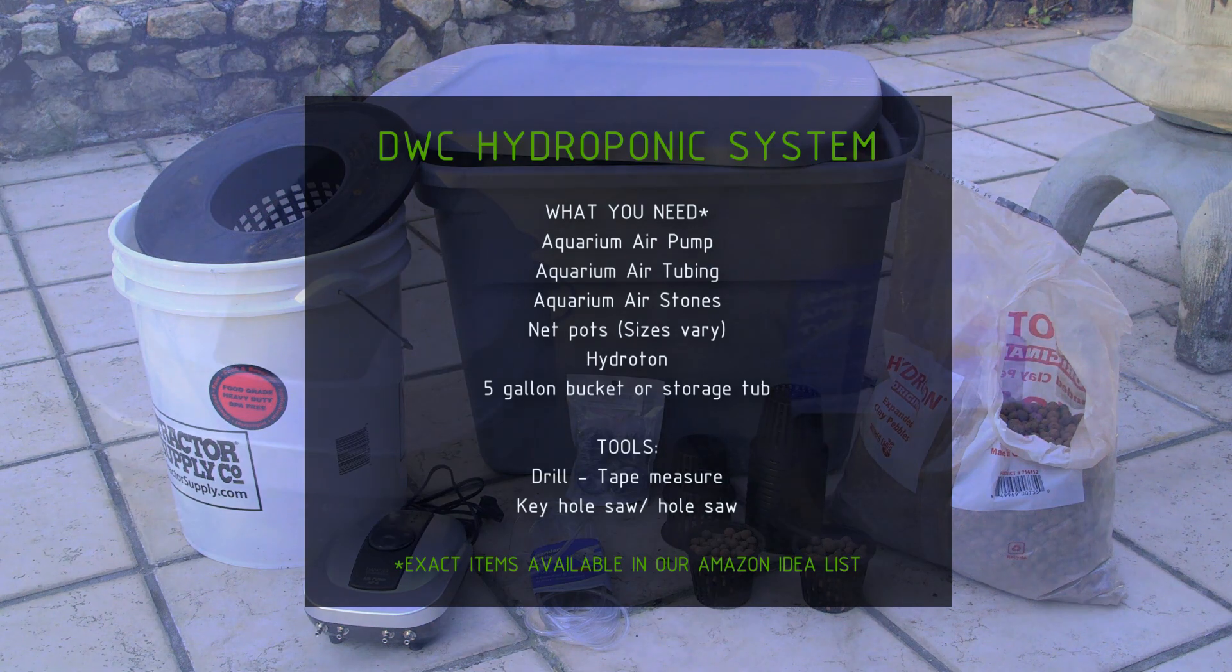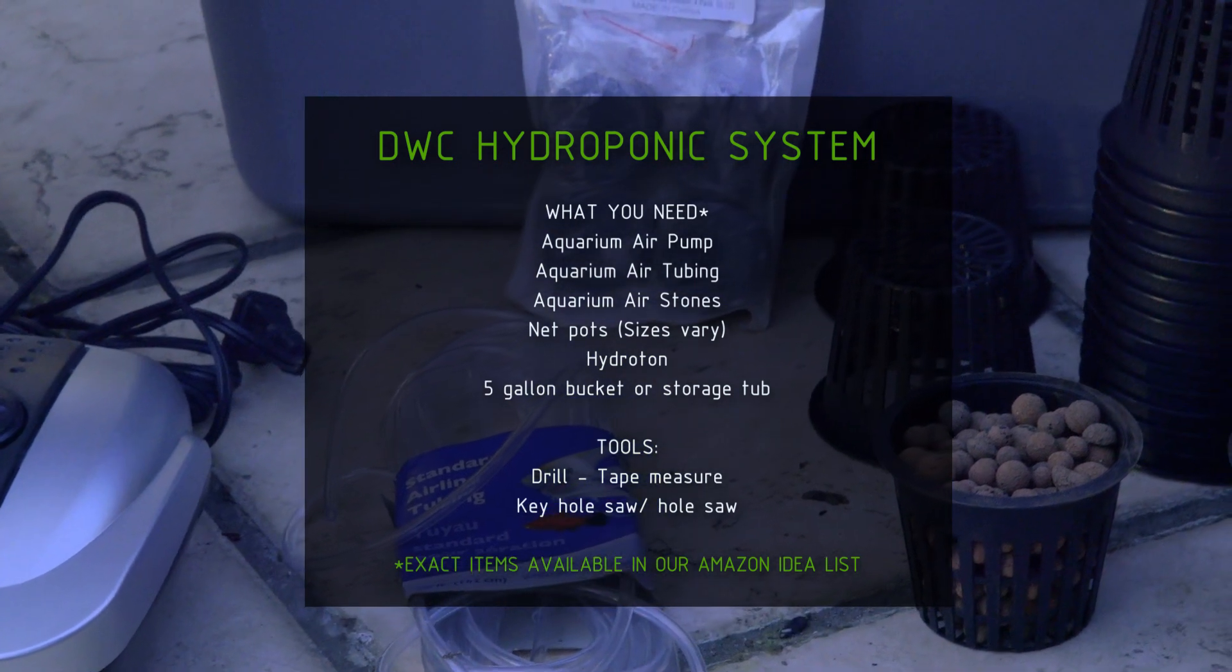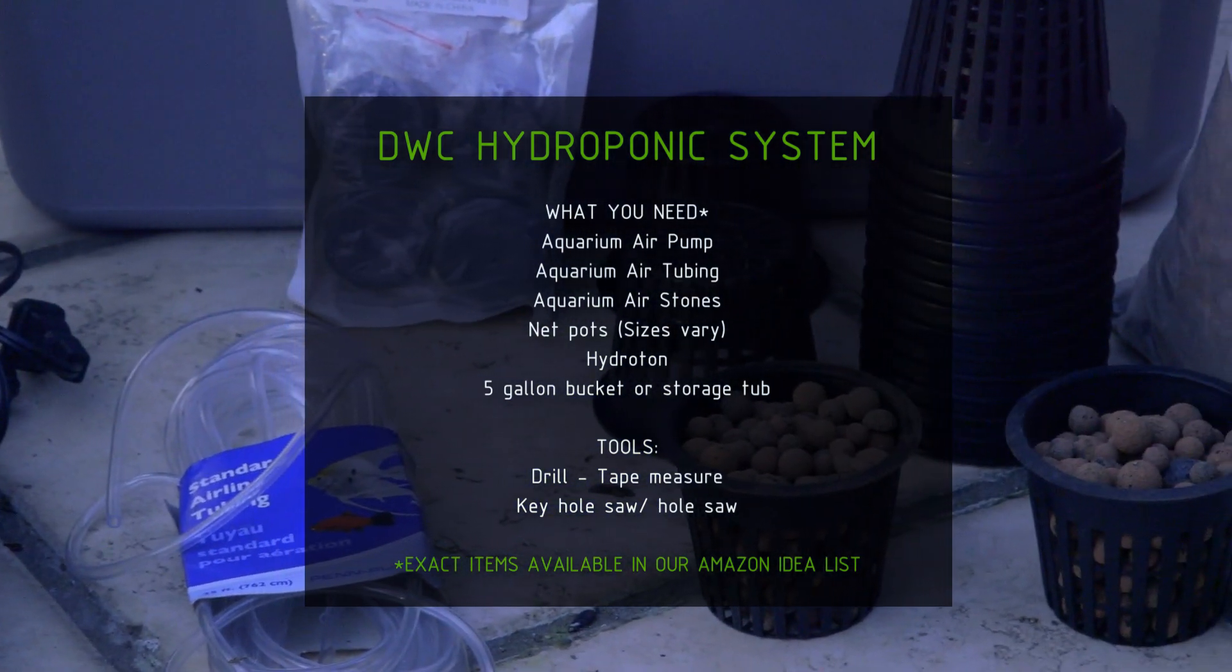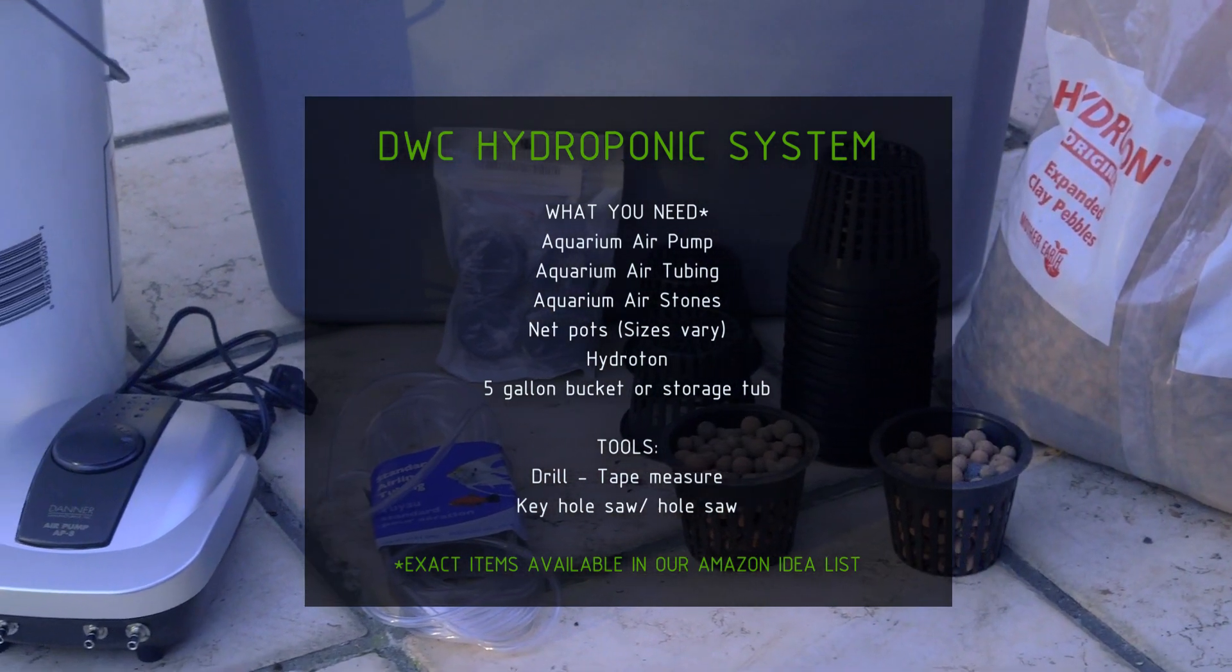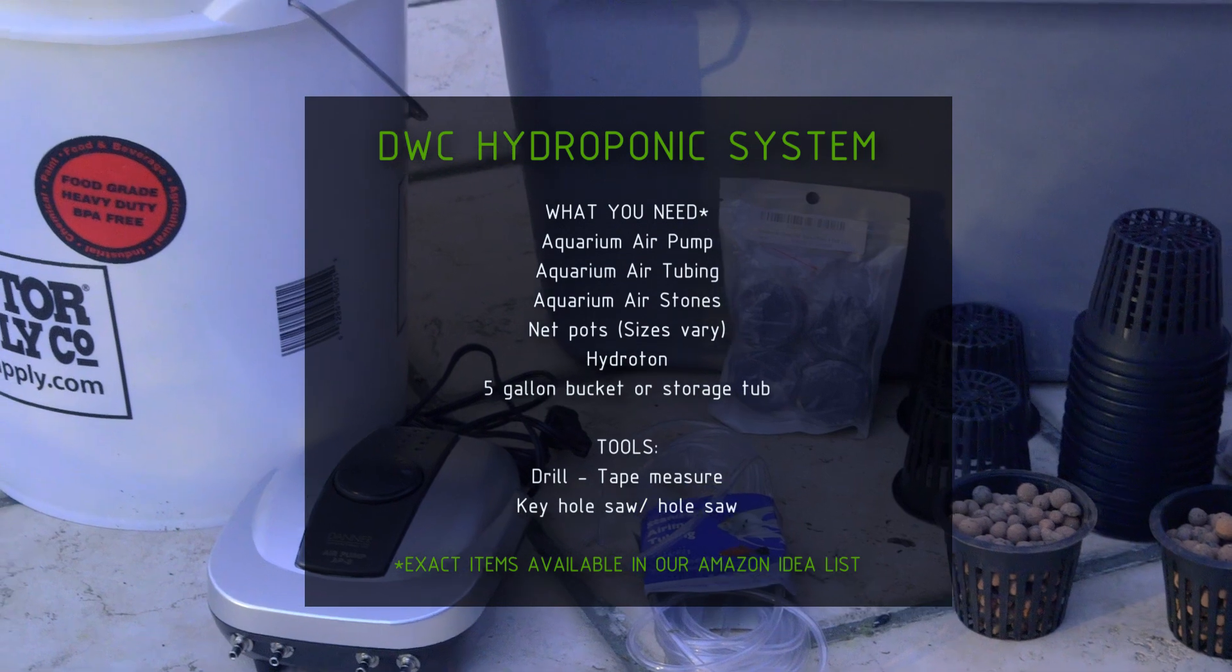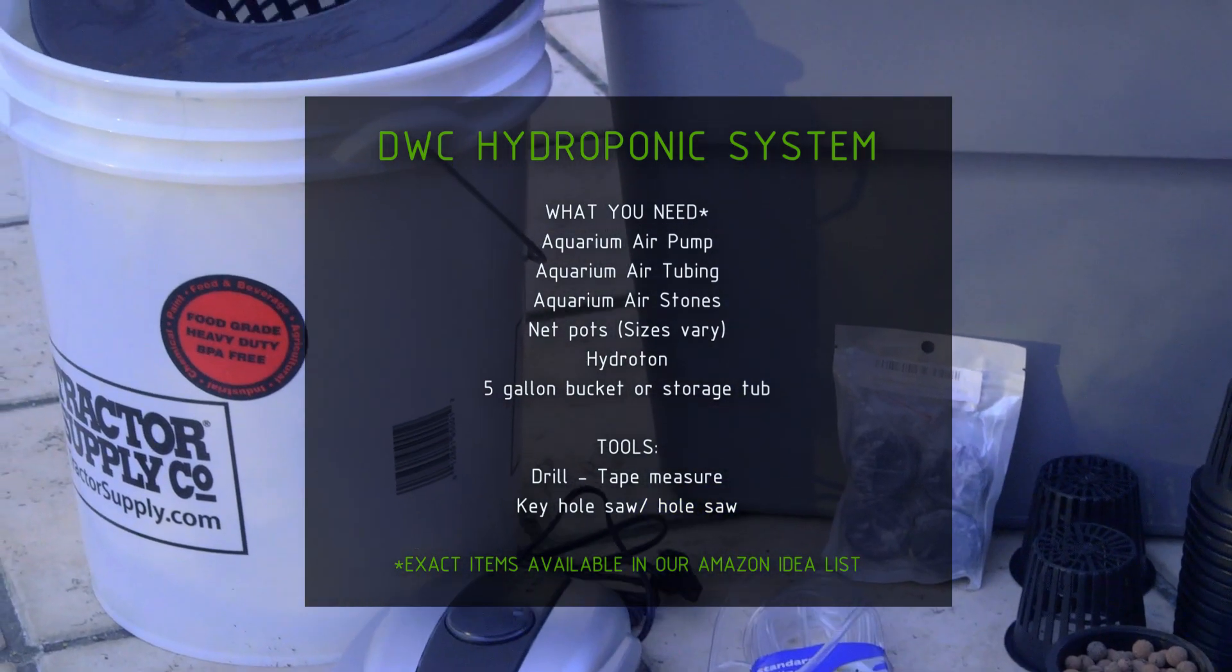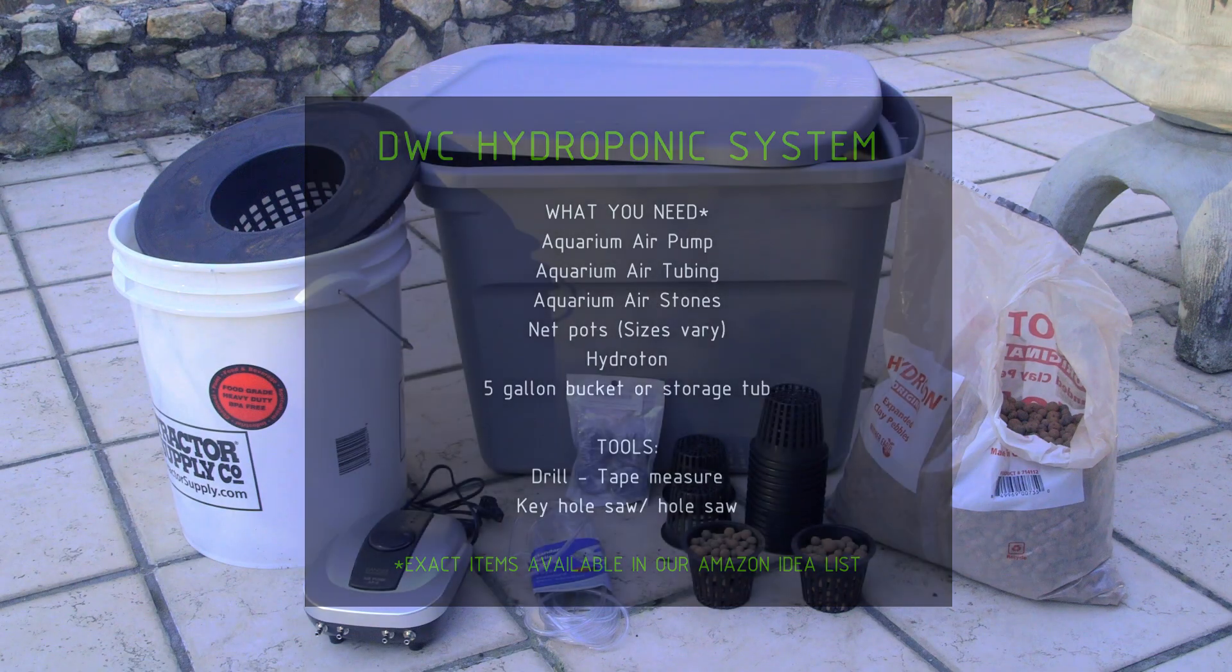Here's what you need. You need an aquarium air pump, aquarium air tubing standard size, aquarium air stones, net pots, hydroton which is an expanded clay grow medium, five gallon buckets or storage tubs, and you also need a drill, tape measure, and either a keyhole saw or a hole saw to make the holes in the top. A lot of these items are available on our Amazon idea list. You can find the link in the description for that, and we'll talk more about each item as we use them.